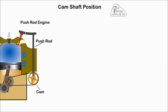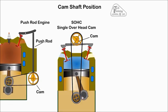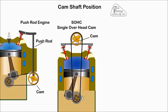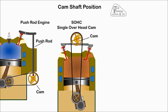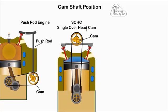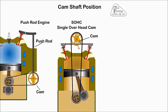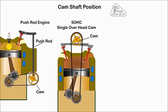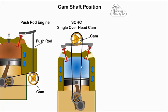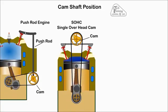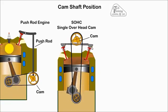SOHC - Single Overhead Cam. In this design the camshaft was relocated to the top of the engine and driven by a timing chain or belt. One camshaft was used to operate both the inlet and exhaust valves via rocker arms.